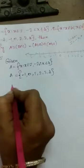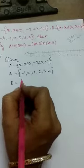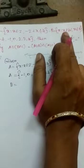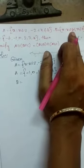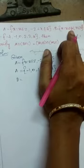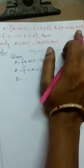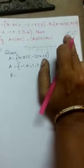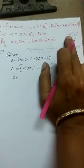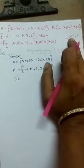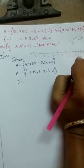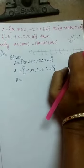Next, Set B. What is the limit? Such that x belongs to whole numbers, x less than or equal to 5. We know whole numbers start from 0, so Set B equals {0, 1, 2, 3, 4, 5}.